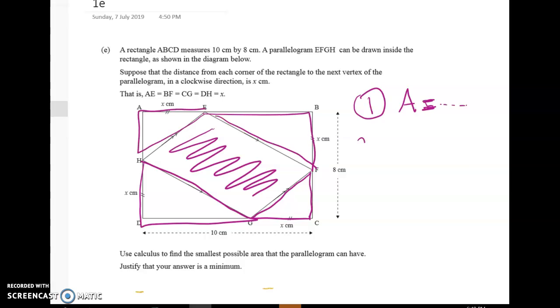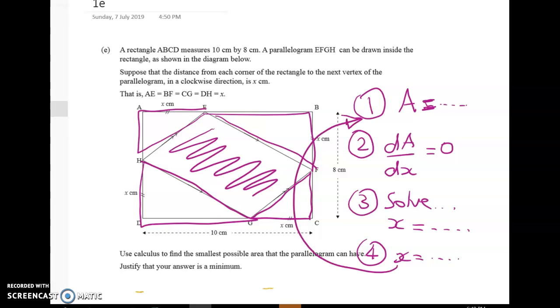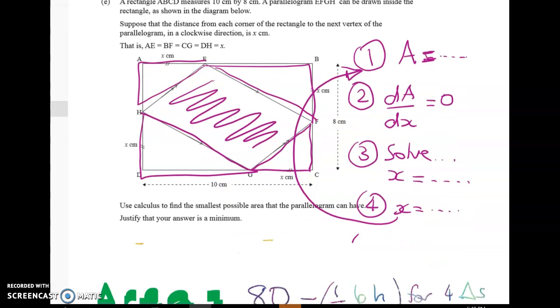Okay so we got an expression for area and then we said for a min or a max we must have the derivative is equal to zero. So we found that and then we solved that and we got x equals blah blah blah. And then we took that x equals blah blah value and we chucked it back in to the expression. And the last thing we did was we did our justification.